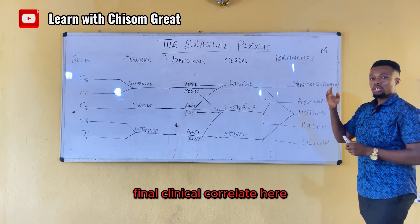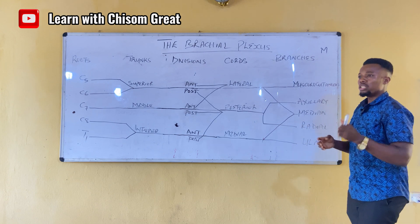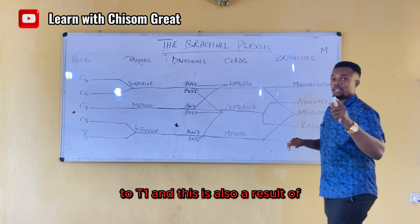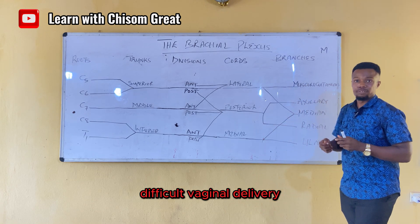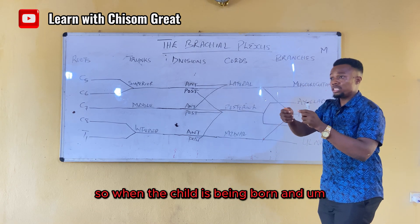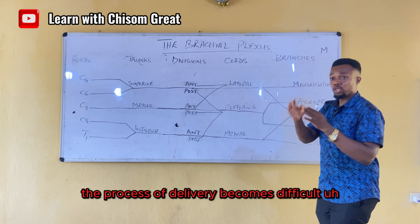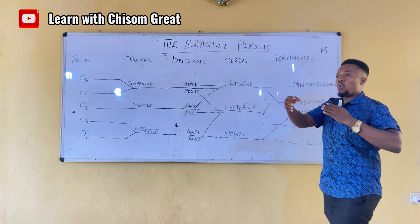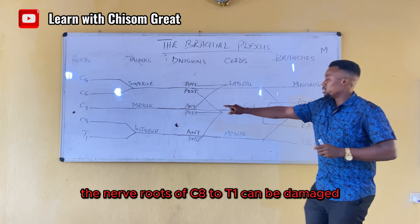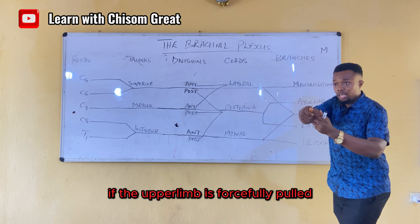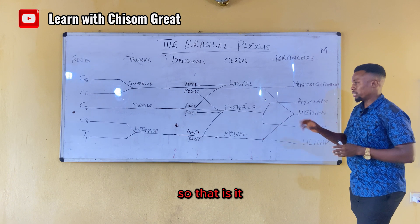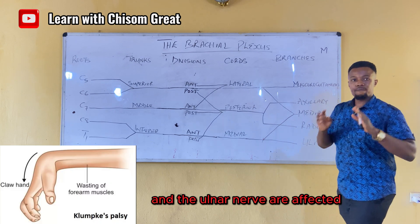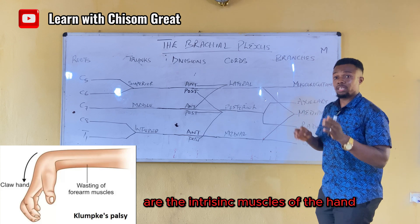The third clinical condition is Klumpke's palsy. Klumpke's palsy is damage to the lower group of roots, C8 to T1, and is also a result of difficult vaginal delivery — when the hand of the child comes out before the head and the arm is forcibly pulled upward, damaging the C8 to T1 nerve roots. The nerves affected are the median nerve and the ulnar nerve, and the muscles affected are the intrinsic muscles of the hand.